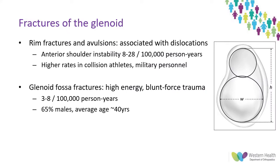Glenoid fractures come in two patterns: rim fractures and avulsions associated with dislocations, or glenoid fossa fractures typically associated with high energy blunt force trauma. On average, the glenoid is 32mm high and 25mm wide anteriorly to posteriorly, which is useful for understanding the size of fragments involved.